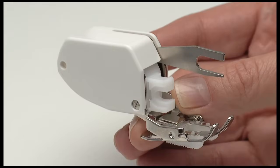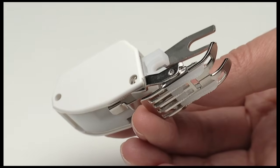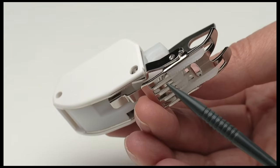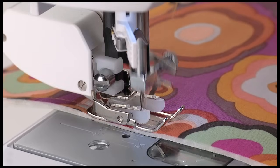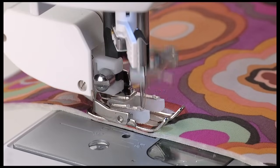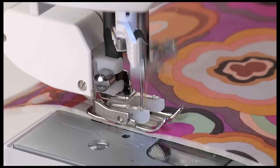The Even Feed Foot has its own set of feed dogs that work in conjunction with the machine's feeding system to facilitate the movement of the fabrics while stitching. The upper feeding mechanism pulls the top fabric at the same rate that the machine's feed dogs are pulling the bottom fabric.